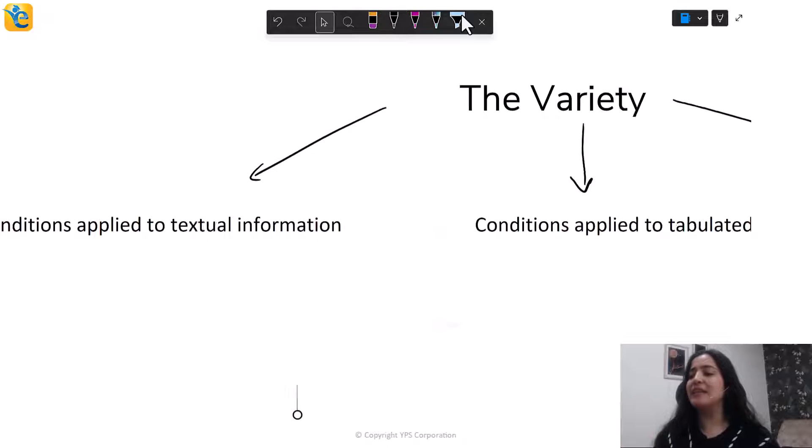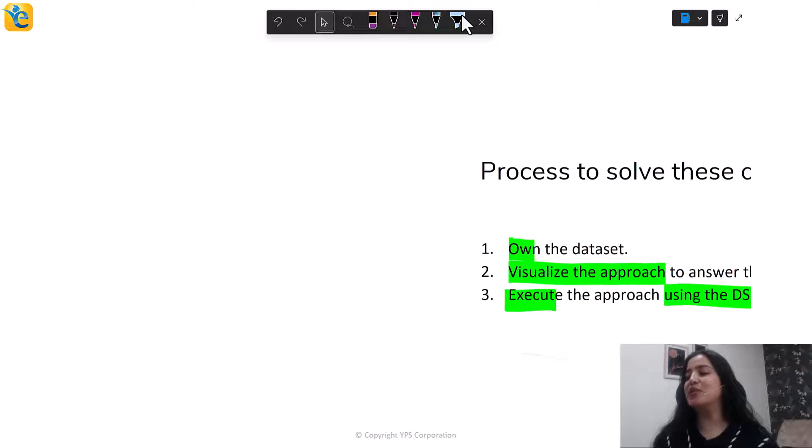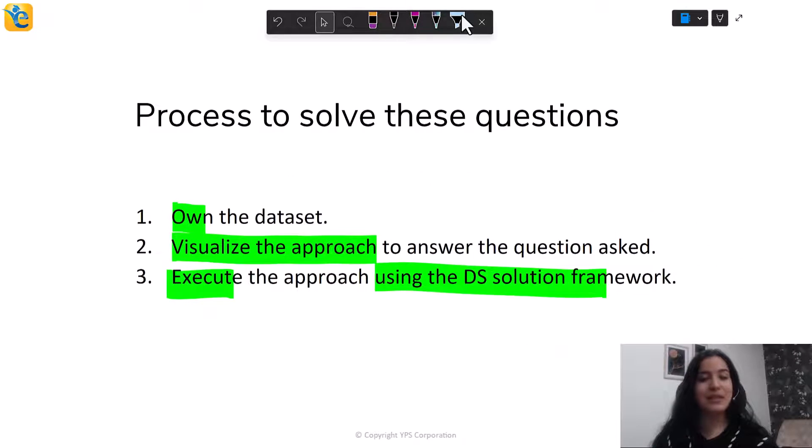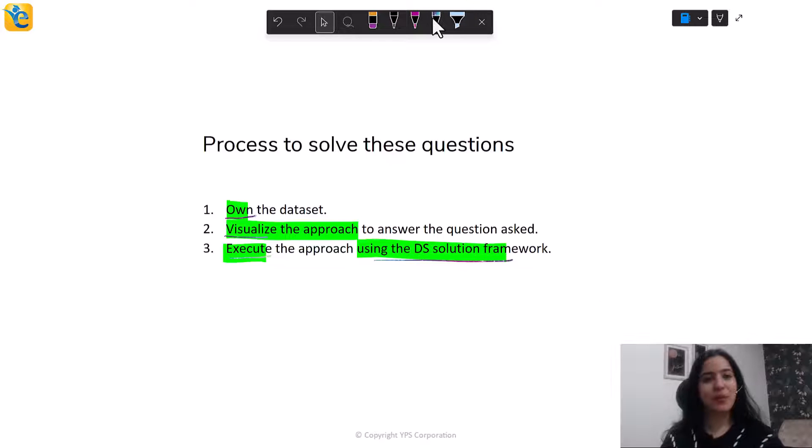But before all of that, let's just quickly recap. What is this process that you will use every time to solve these questions? The keywords are highlighted for you. Well, regardless of the type of verbal reasoning DS question, we will always follow the same process. You will own the data set, understand it really well, immerse yourself in it. Then you will visualize the approach to answer the main question asked before you jump into the statements. And then you will execute the approach that you just built using DS solution framework. It's a data sufficiency question. There is a framework that you follow for all questions in this type.